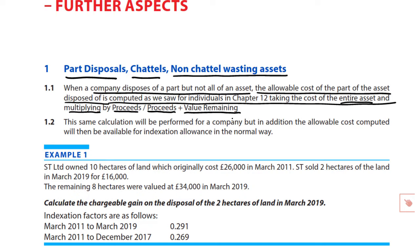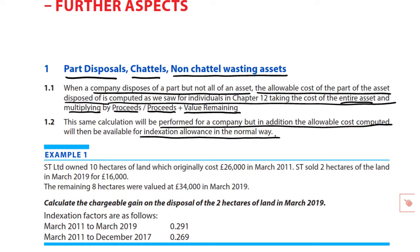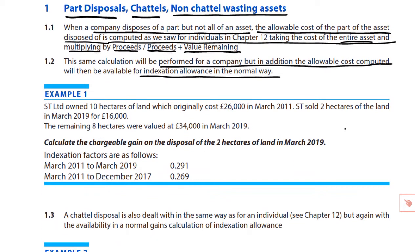So if I sold 60 acres, I know what I sold them for. The question will also tell you the market value of the 40 acres you retain. The same calculation will be performed for a company, but in addition there is the indexation allowance to compute. Indexation has been made much easier since the June 2019 exam, given that they will provide indexation factors, and given also that indexation allowance was frozen as at December 2017.